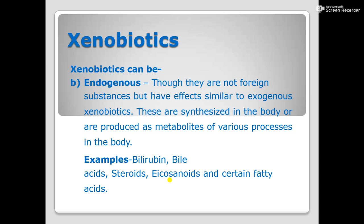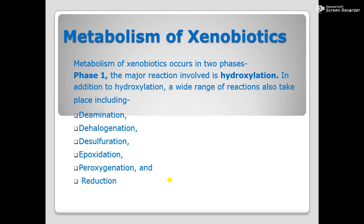Steroids are also produced in your body. The adrenal gland releases special chemical substances like adrenaline, epinephrine, and norepinephrine. The adrenal medulla and adrenal cortex release certain steroids. So steroids can be produced by your body, and bile acids can also be produced by your body — that is why they come under the category of endogenous xenobiotics.